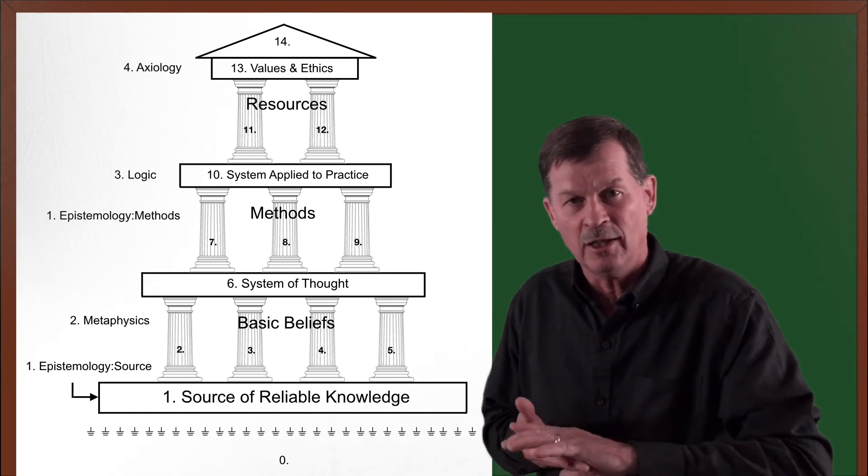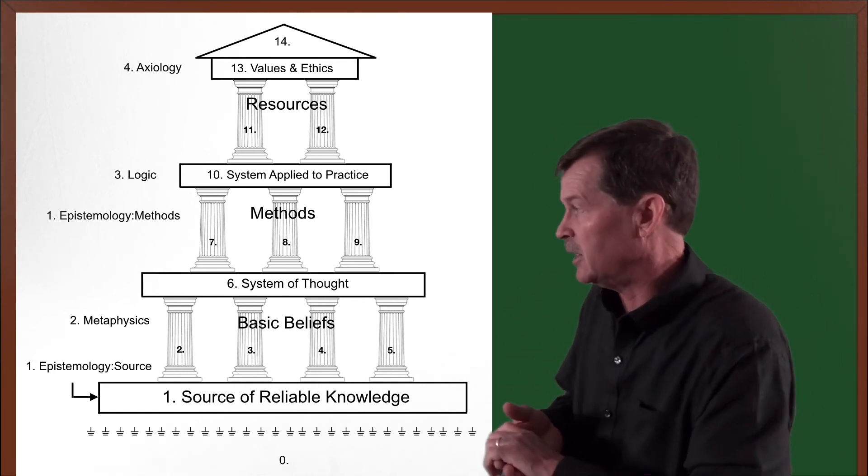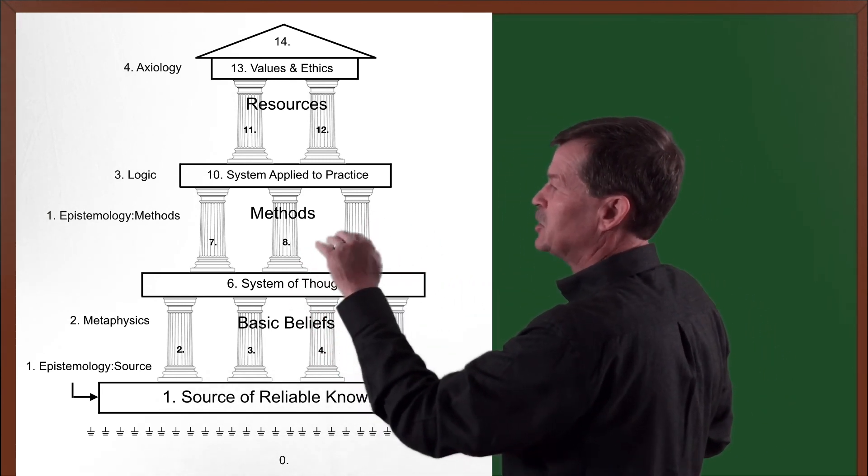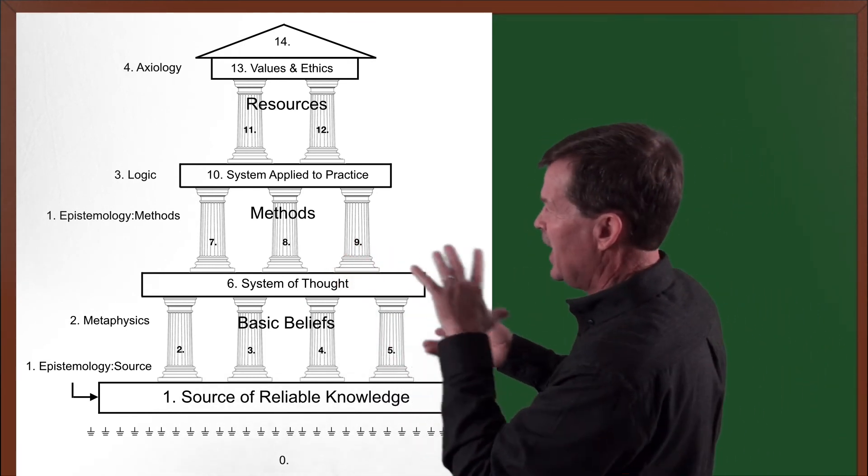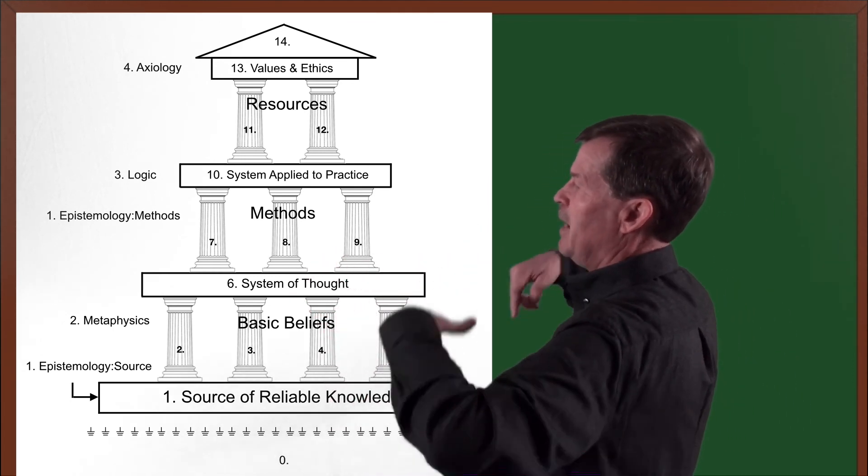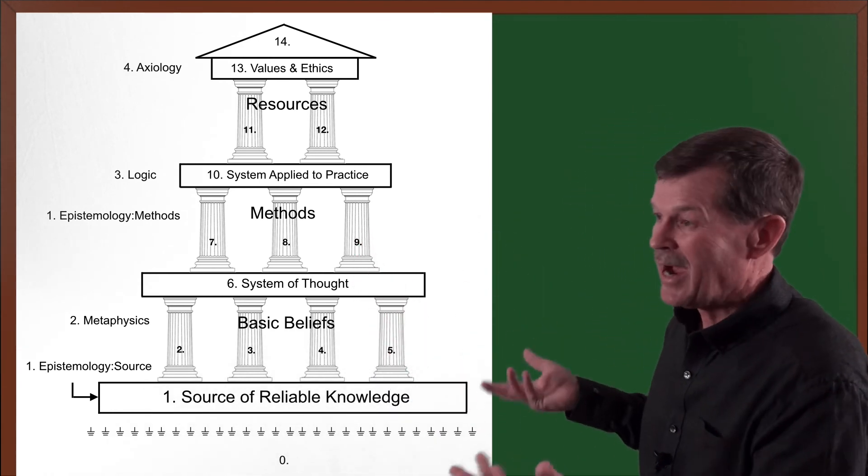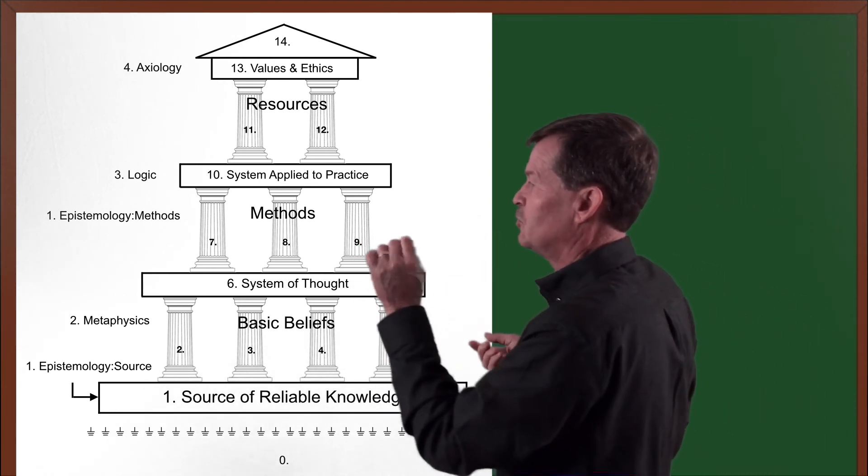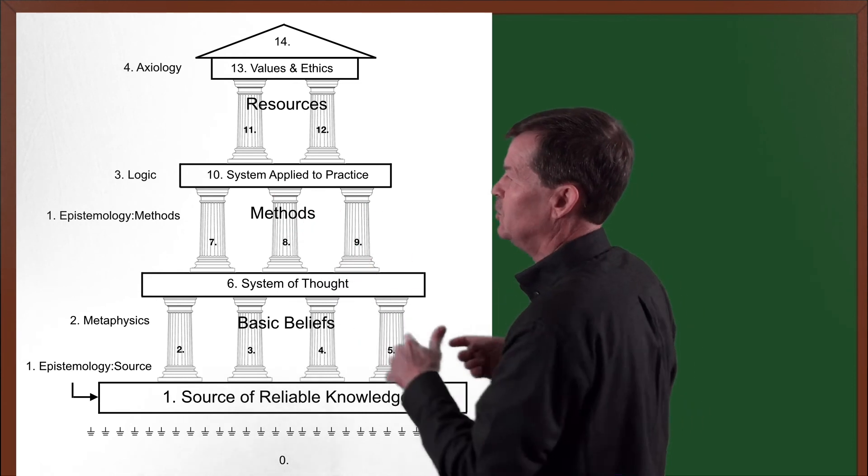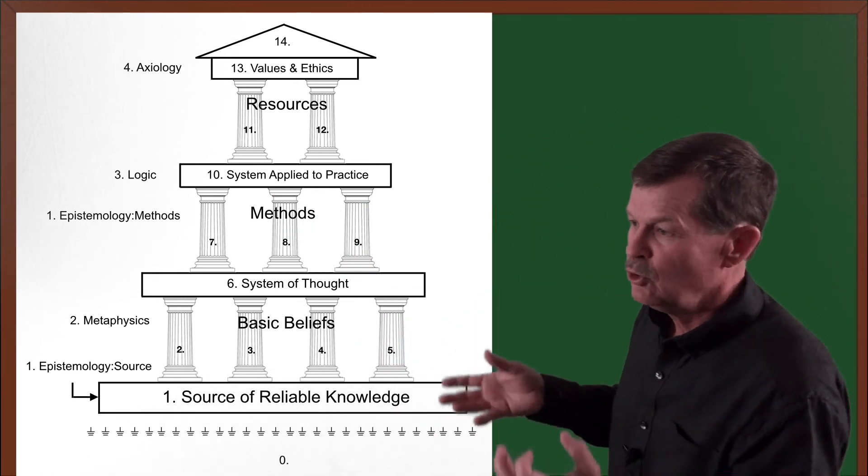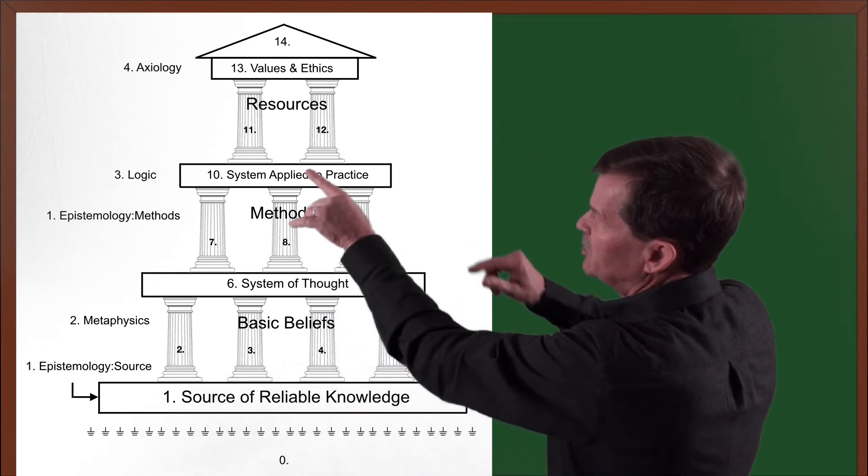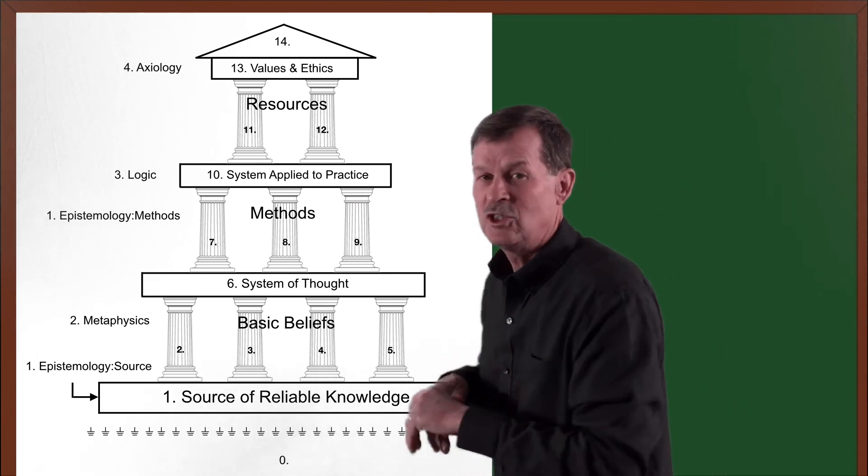The next metaphysics has to do with the basic beliefs that comes out. So the metaphysics is the ontology. What are my basic beliefs about reality? And so that's ontology, but that's under metaphysics. Then the system of thought. Then the epistemology again, but it's methods. How do I now apply from my source, through my basic beliefs, my methods? That's epistemology. Back to how do we get knowledge? And it's through the methods. Then once we have the methods in place, then we have a logic that's produced. A system that is practiced producing more reliable knowledge. So that is through logic. And then up to the top, we have our values and ethics, which is axiology.